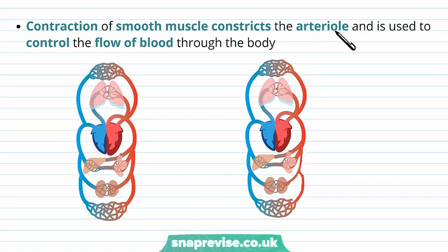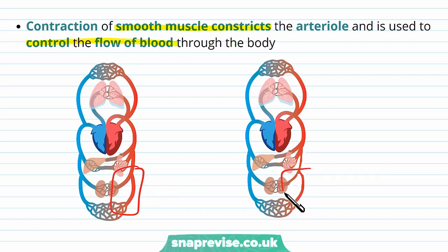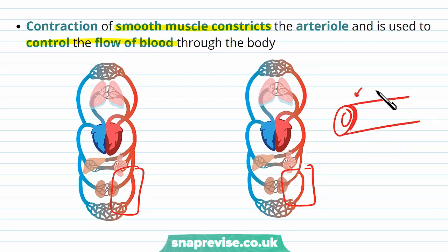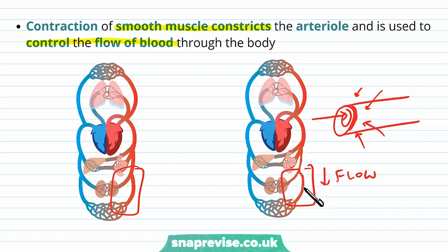Arterioles are important in controlling their diameter. The smooth muscle around the arteriole can constrict, limiting the diameter of the vessel, which is important in controlling flow. For example, if the arterioles' smooth muscle constricts, the diameter becomes smaller and less blood flows through. During strenuous exercise, most flow is directed to important organs like the brain, heart, lungs and muscles, and directed away from less critical organs at that time such as the intestines and kidneys.